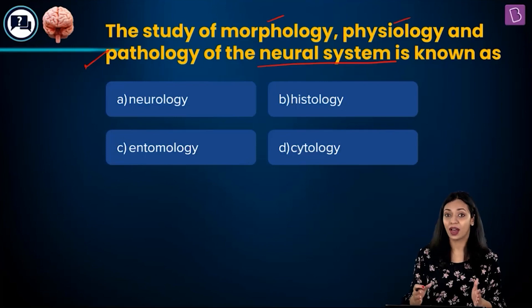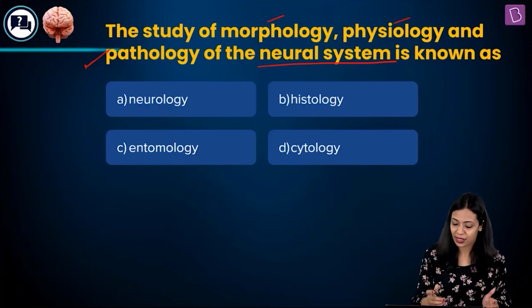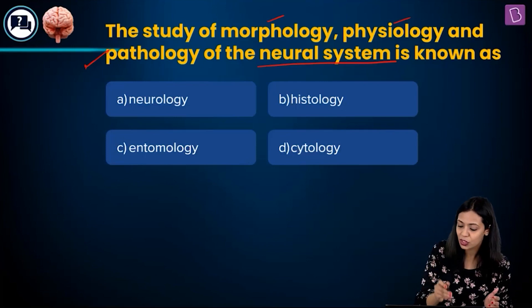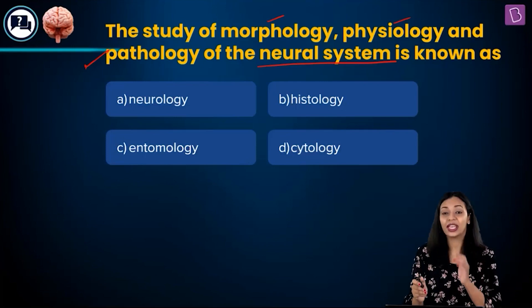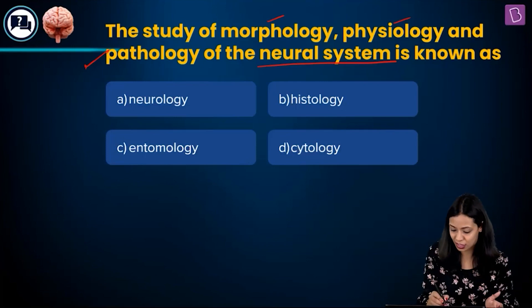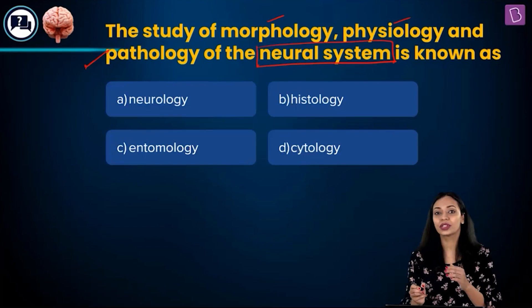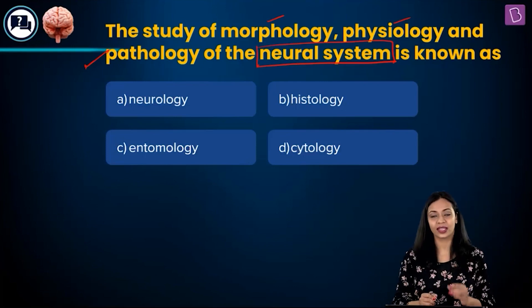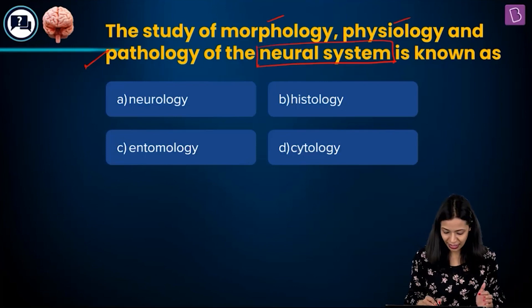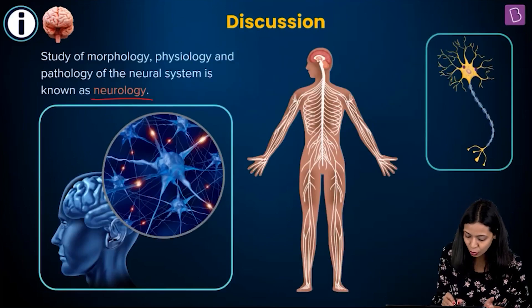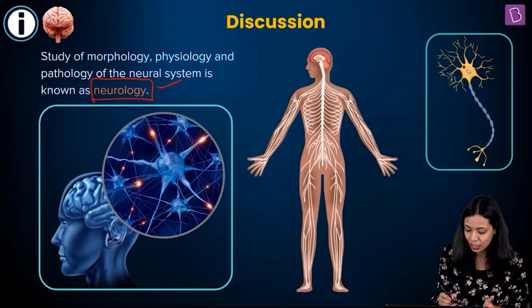In the question we are asked about what the study of morphology, physiology and pathology specifically of the neural system is known as. It is known as neurology.